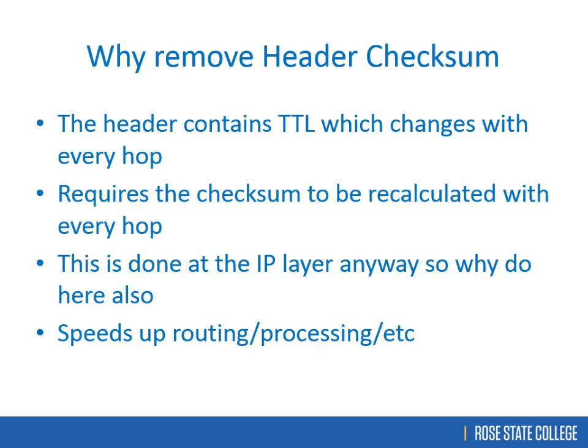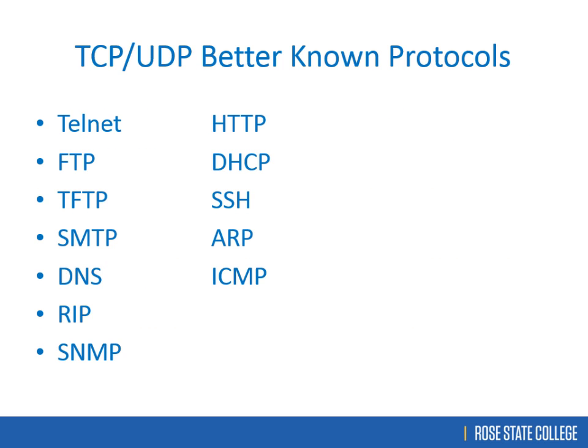Now let's talk about each protocol. TCP is connection-oriented; UDP is not. UDP was originally used for broadcast traffic like printing — you didn't need to confirm every packet made it to the printer. It was also used for streaming video. If you're watching Netflix and lose a packet, the movie just continues — you don't need guaranteed delivery.